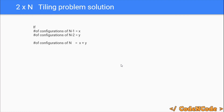So the 2×N tiling problem can be solved using Fibonacci numbers, as we have discussed. I hope you got the idea of how we derive DP solutions step by step. If you have any queries, post them in the comments, and leave a like if you found it helpful. Thank you for watching — keep coding, see you in the next video!